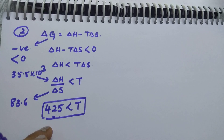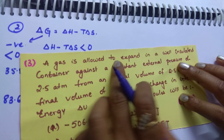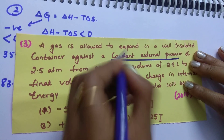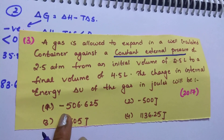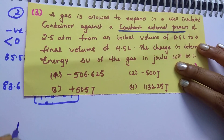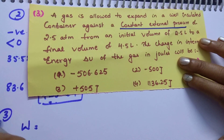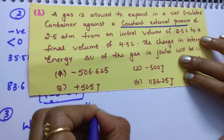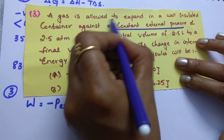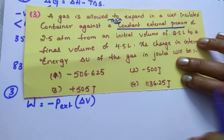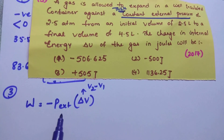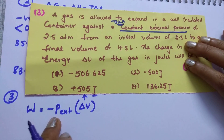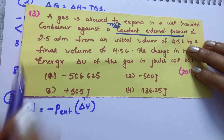Next question: a gas is allowed to expand in a well-insulated container against a constant external pressure. Whenever a constant external pressure is given, it is an irreversible process. For an irreversible process, the work formula is W equals minus P-external times delta V, where delta V is V2 minus V1. This is the key trick: use this formula when constant external pressure is given, not the 2.303 RT log(V2/V1) formula.